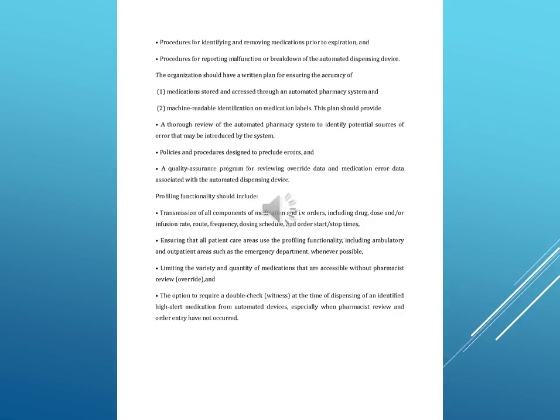Profiling functionality should include: transmission of all components of medication and IV orders, including drug, dosing or infusion rate, route, frequency, dosing schedule, and order start/stop times; ensuring that all patient care areas use the profiling functionality, including ambulatory and outpatient areas such as the emergency department, whenever possible; limiting the variety and quantity of medications that are accessible without pharmacist review or override; and the option to require a double-check witness at the time of dispensing of an identified high-alert medication from automated devices, especially when pharmacist review and order entry have not occurred.